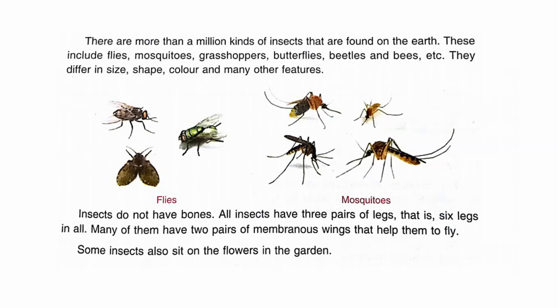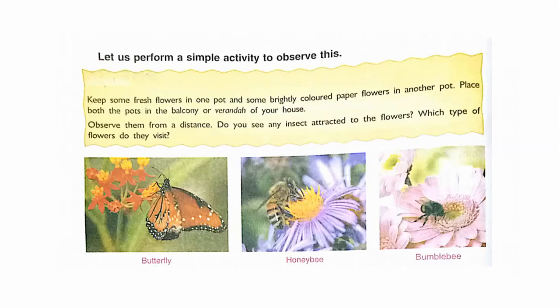Some insects also sit on flowers in the garden. There is an activity for you: keep some fresh flowers in one pot and some brightly coloured paper flowers in another pot. Place both pots in the balcony or veranda of your house and observe them from a distance. Do you see any insect attracted to the flowers? Which type of flowers do they visit?